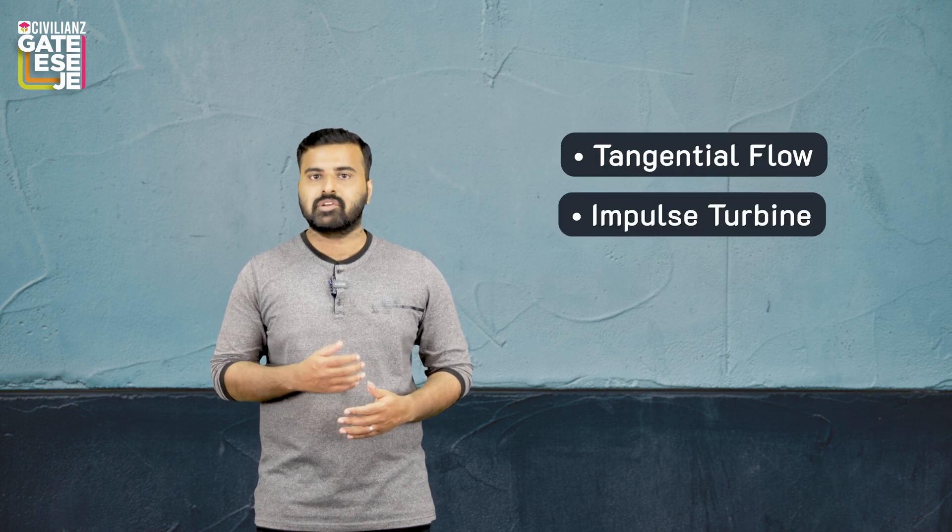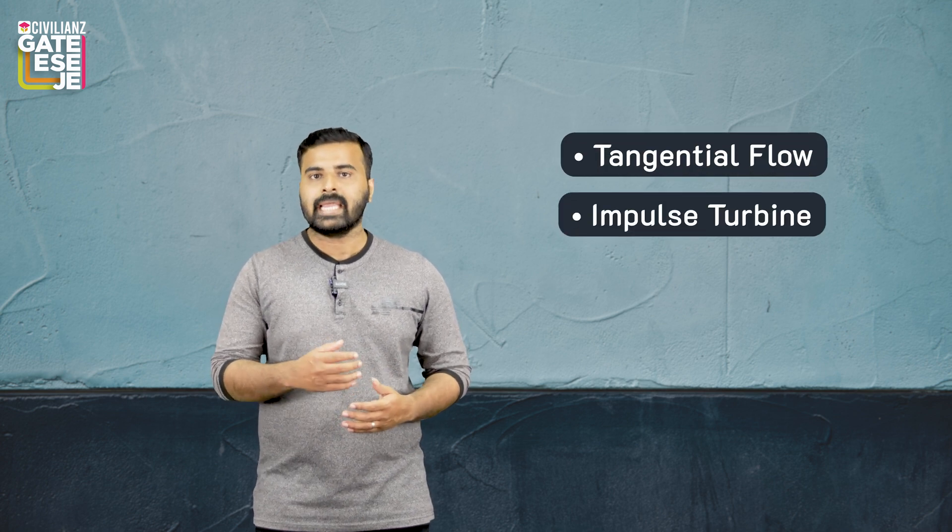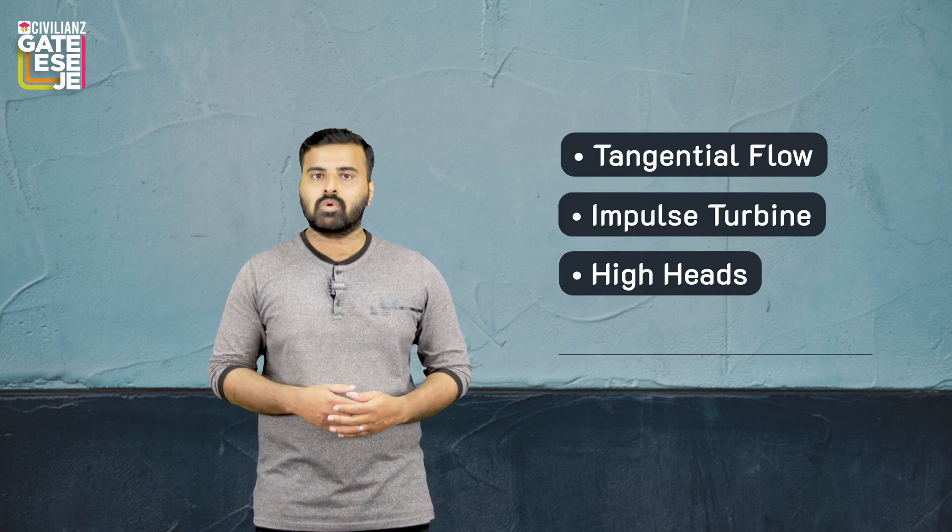The Pelton wheel is invented by a famous American scientist known as Lester Pelton, and hence the name. It is also known as the Pelton turbine. In one word, we can say that it is a tangential flow impulse turbine used for high heads and low specific speeds. The runner is the rotating part of the turbine.